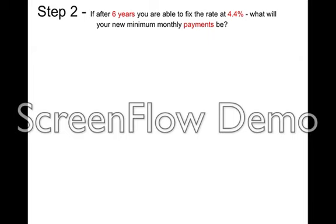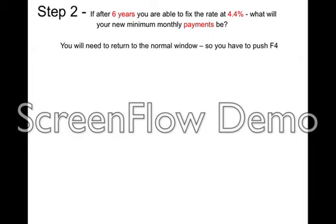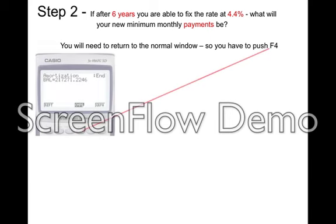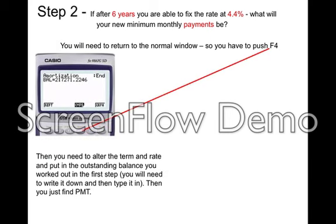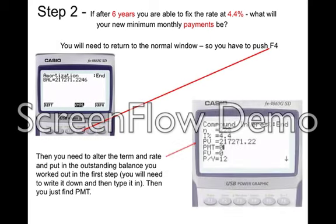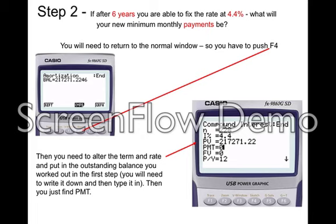Step two: after six years you're able to fix the loan, so you've got to go back to the normal window and start again. If you push F4 you'll come back to the normal window. You have to alter N, I, and PV — so you're actually changing three things: how much time you've got left on the loan, the rate, and your PV. Your PV is actually the balance you've just worked out, so write that down so you can transfer it in.